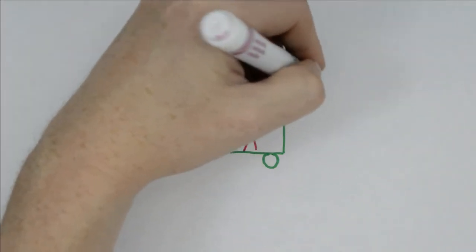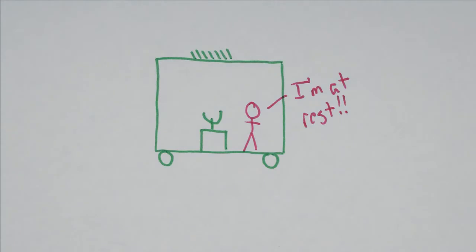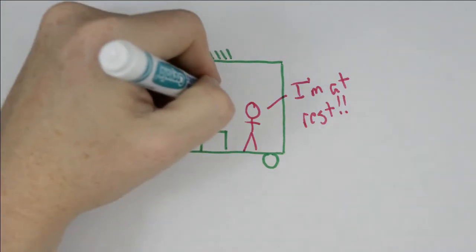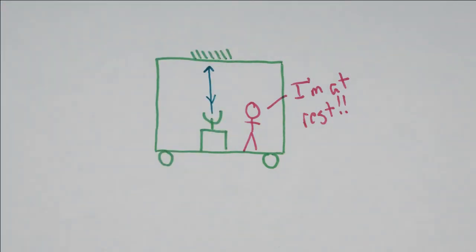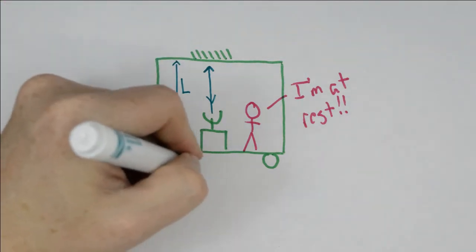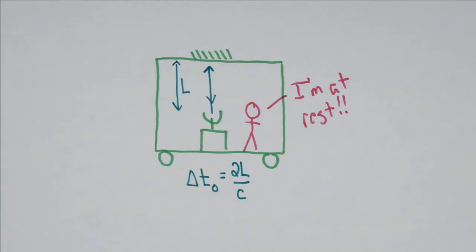We are going to consider a clock. It's going to be a very basic clock at rest with respect to an observer. This clock is going to run by emitting a flash of light which will travel straight up, strike a mirror, reflect back down and then travel back to the emitter which will detect it and count the time. Because we have a distance L, the time that it's going to take delta T0 is equal to 2L divided by C.